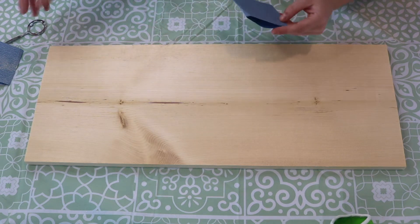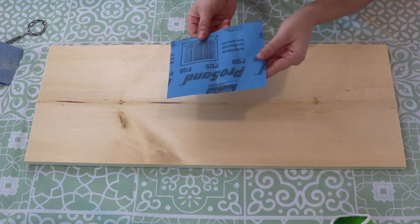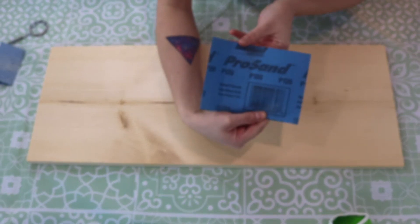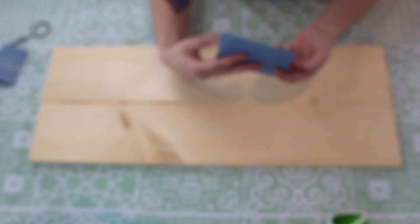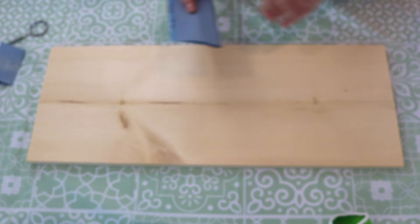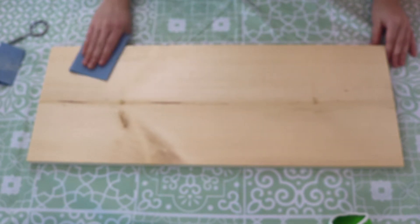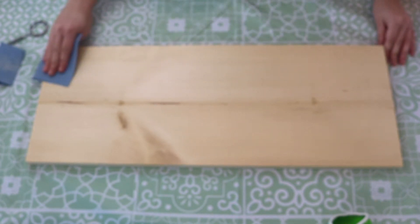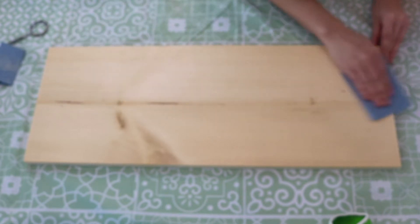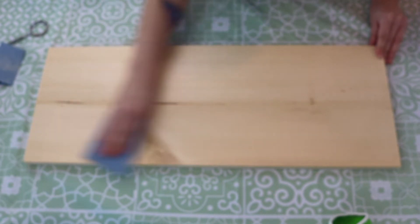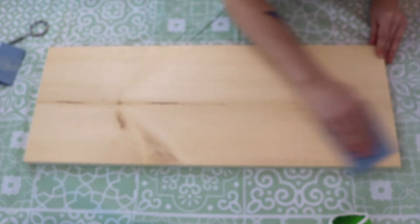We take a 120 grit sheet of sandpaper and cut it to a size that fits in your hand, and you go along the whole piece with the grain, trying to get any imperfections or splinters out of the wood.